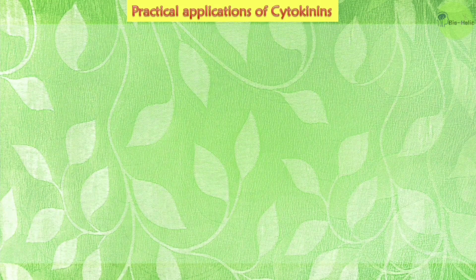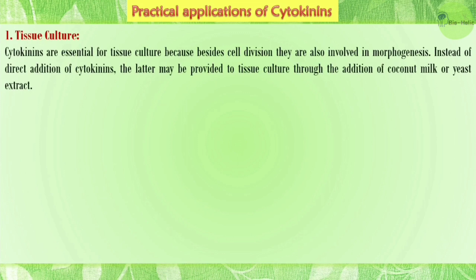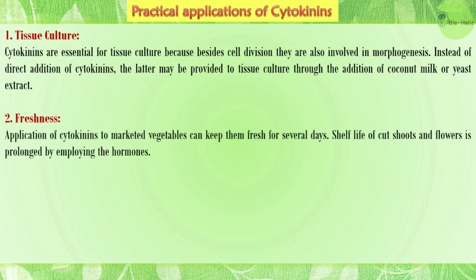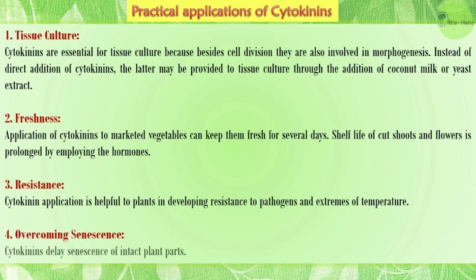Like other plant hormones, cytokinins have many practical applications. In tissue culture, cytokinins are essential because besides cell division they are also involved in morphogenesis. Instead of direct addition of cytokinins, they may be provided through addition of coconut milk or yeast extract. Application of cytokinins to marketed vegetables can keep them fresh for several days, prolonging shelf life of cut shoots and flowers. Cytokinin application also helps plants develop resistance to pathogens and extremes of temperature, and since cytokinins delay senescence, they are used for overcoming senescence of intact plant parts.